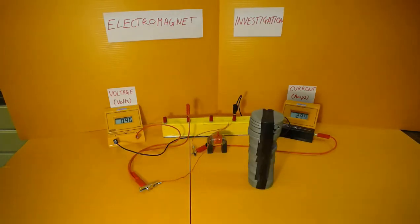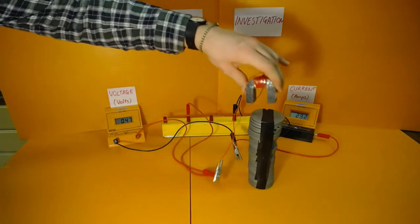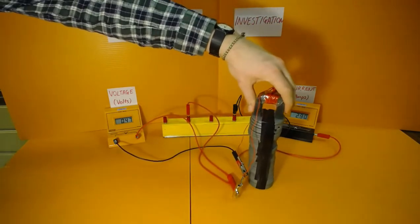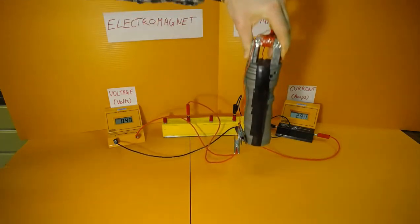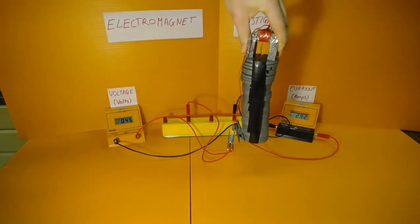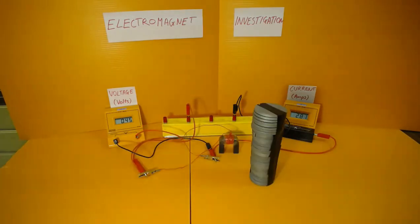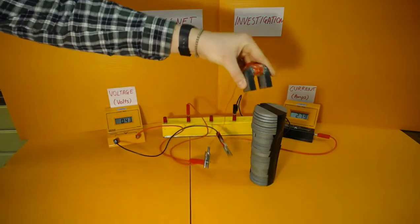With the mass increased to 2,400 grams, the electromagnet at this voltage can only just pick it up. However, at just 100 grams more at 2,500 grams, it proves too much for the electromagnet.